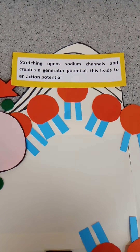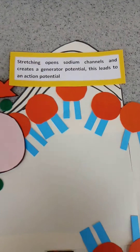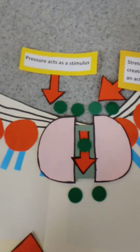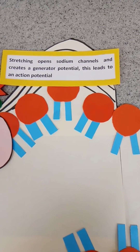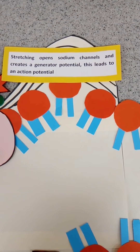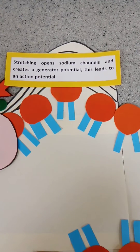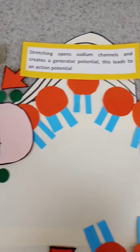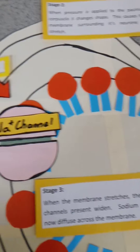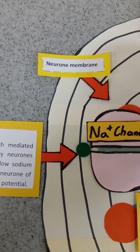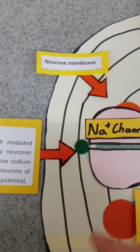Sensory neurons are covered in what's called the percentine corpuscle. Pressure is going to act as a stimulus, which causes stretch-mediated sodium ion channels to open up — that is the key thing that we need to remember. So, if we think about this in stages, remember all of this is happening along the neuronal membrane.